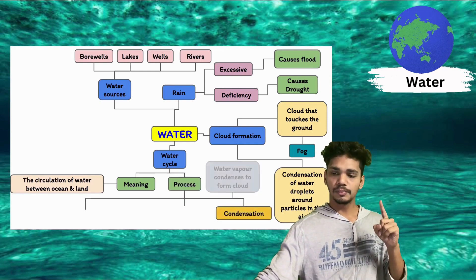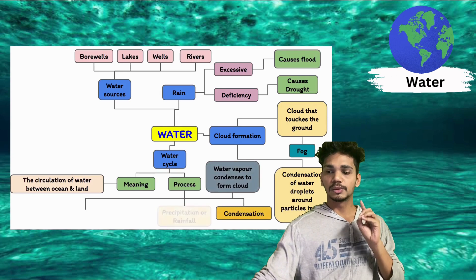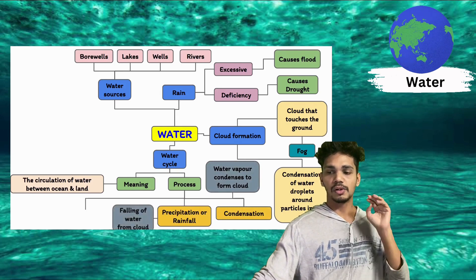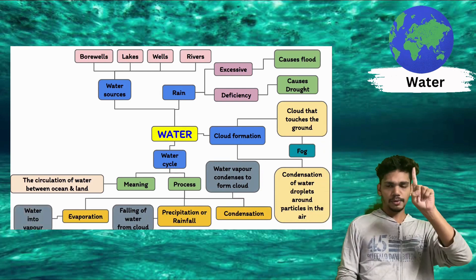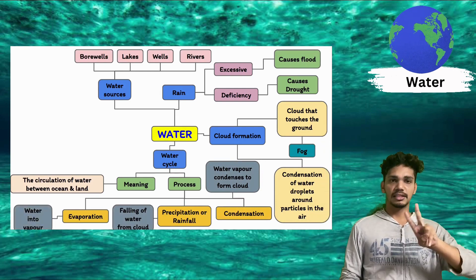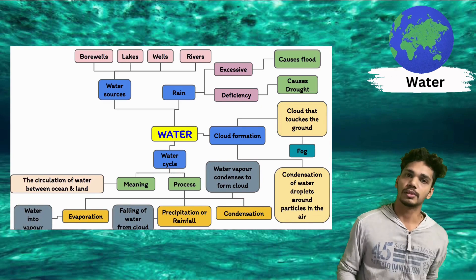So the process: condensation - water vapor condenses to form a cloud. Then precipitation or rainfall - falling of water from the cloud and evaporation. So first comes evaporation, then comes condensation, and then comes precipitation. No, again...